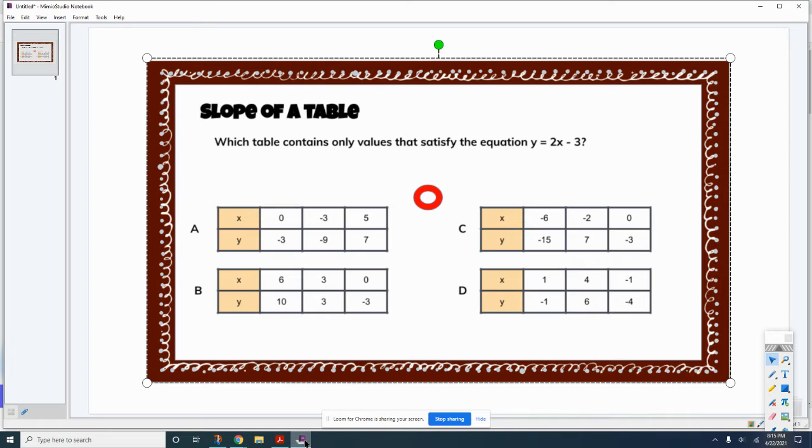So I'm going to do the same exact thing. I'm going to take my values of x, plug it in and see if I can get y. So I'm looking at 2 times whatever x is minus 3 and will I get my y?